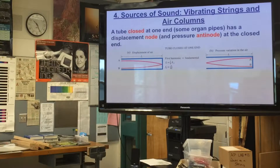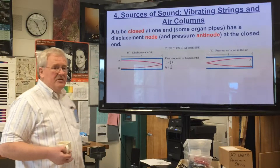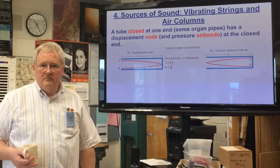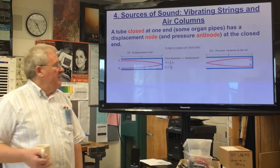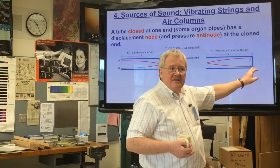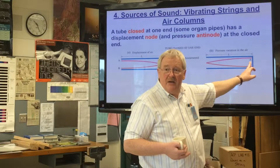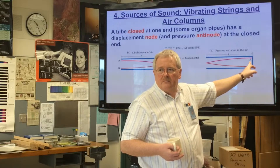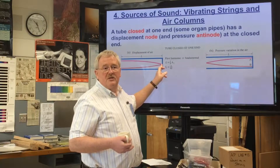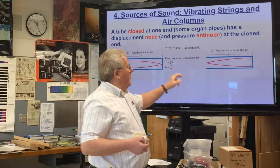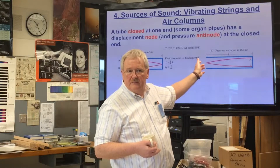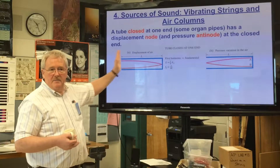Now let's look at a tube closed at one end. Things are no longer symmetric. With this end closed, the maximum pressure builds up here because the air has nowhere to go, and there won't be much displacement of the air — again, because it's got nowhere to go. At the open end, the pressure is about atmospheric and we get displacement of the air.